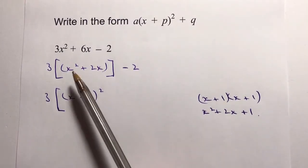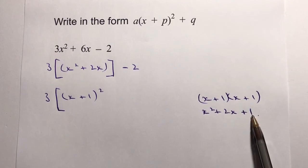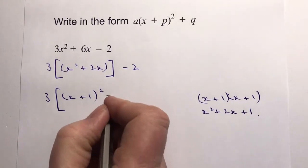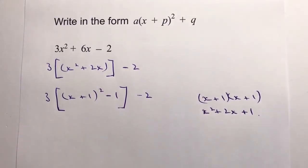That's fine for the first two terms, but I've got this +1 I need to get rid of, so I'm going to write that as -1, close my square brackets, and I've got -2 towards the end.